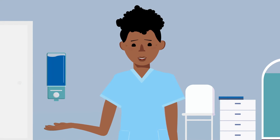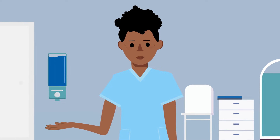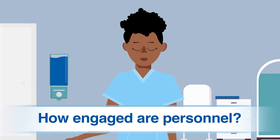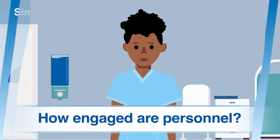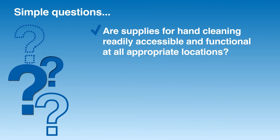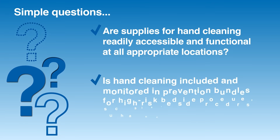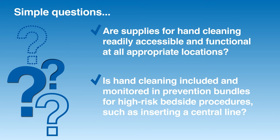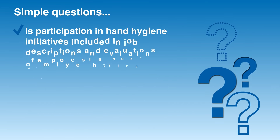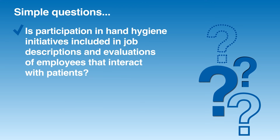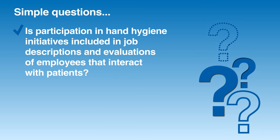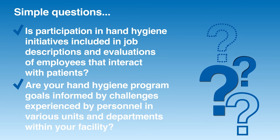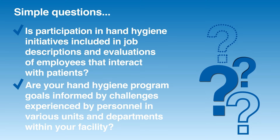A great way to begin implementing a continuous quality improvement program for hand hygiene is to evaluate how engaged personnel are at your facility. Start by asking a few simple questions: Are supplies for hand cleaning readily accessible and functional at all appropriate locations? Is hand cleaning included and monitored in prevention bundles for high-risk bedside procedures, such as inserting a central line? Is participation in hand hygiene initiatives included in job descriptions and evaluations of employees that interact with patients? Are your hand hygiene program goals informed by challenges experienced by personnel in various units and departments within your facility?